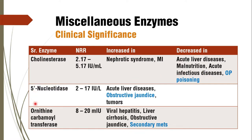In case of 5' nucleotidase, it is increased in acute liver diseases, obstructive jaundice, and tumour. The fact that 5' nucleotidase is increased in obstructive jaundice is of much importance, because its activity is correlated with increase in alkaline phosphatase activity in obstructive jaundice. It gives you a second layer of confirmation — if both alkaline phosphatase and 5' nucleotidase are increased, that confirms it is obstructive jaundice.